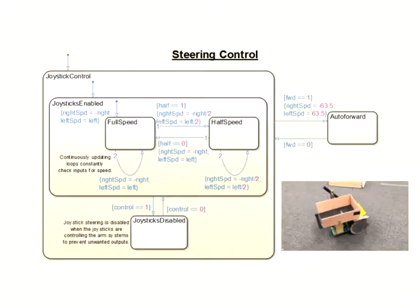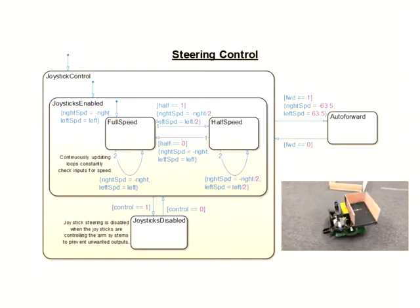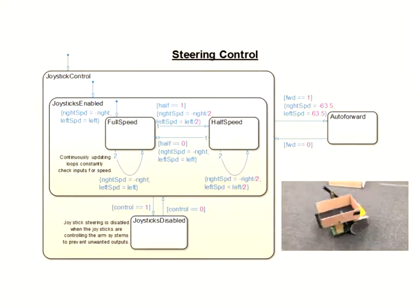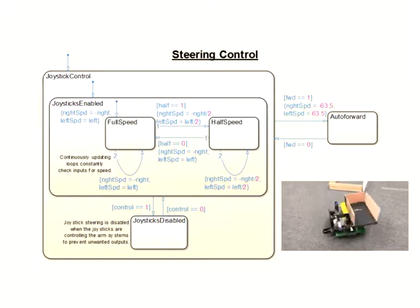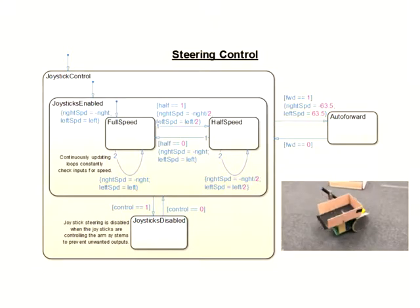The steering system also incorporates a mode known as autonomous forward driving, which moves the robot forward in a perfectly straight line with a single button push. This is used to drive parallel to the corn rows while picking and planting corn.